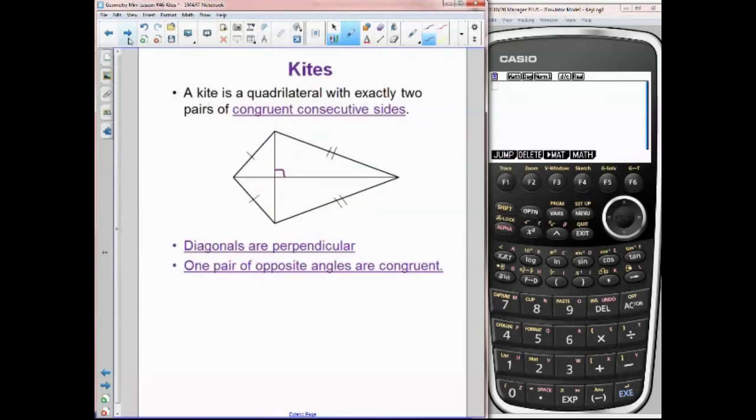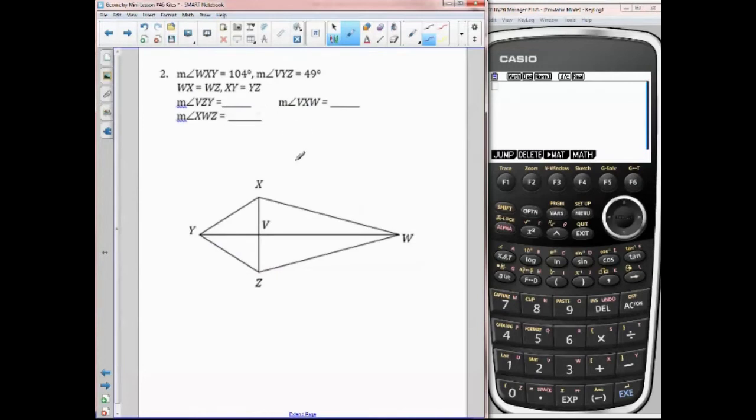So let's take a look at our first example. Here we have a kite. Angle WXY is 104. So WXY this whole thing is 104, so going off my definition, I know this whole thing is going to be 104 also. Angle VYZ, so VYZ, this guy right here is 49. Based on what I know that these are going to be congruent triangles, so corresponding parts are going to be congruent. I know this is also 49.